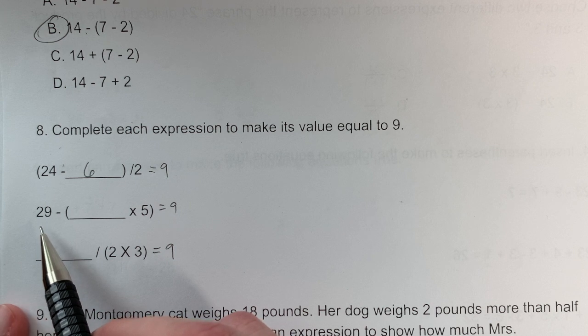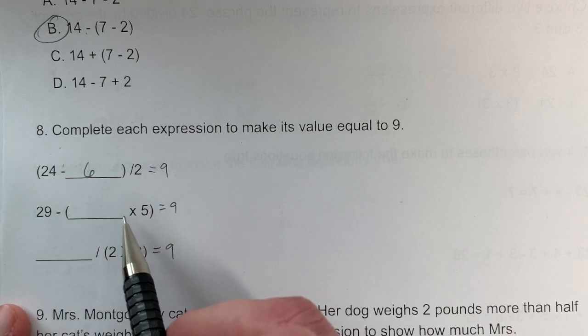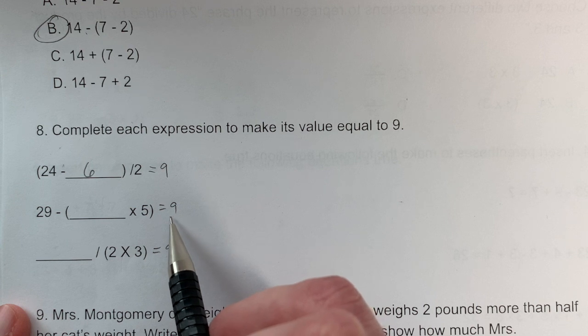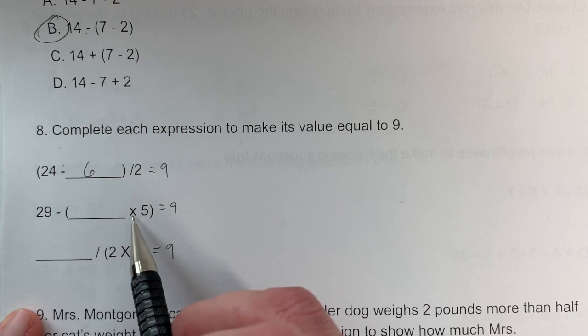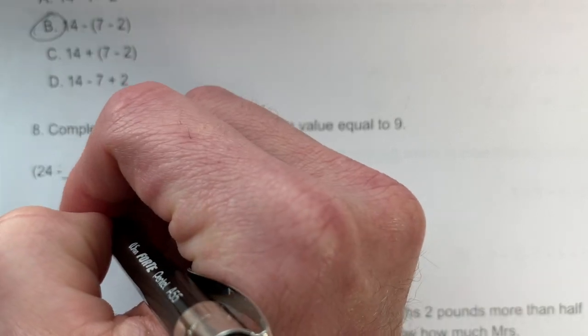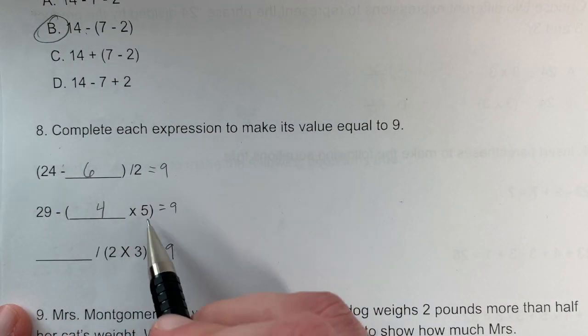Problem 8b: First I figure out what I need. 29 - 20 = 9, so I need 20. The inverse of multiplication is division: 20 ÷ 5 = 4. So 4 × 5 = 20, and 29 - (4 × 5) = 9.